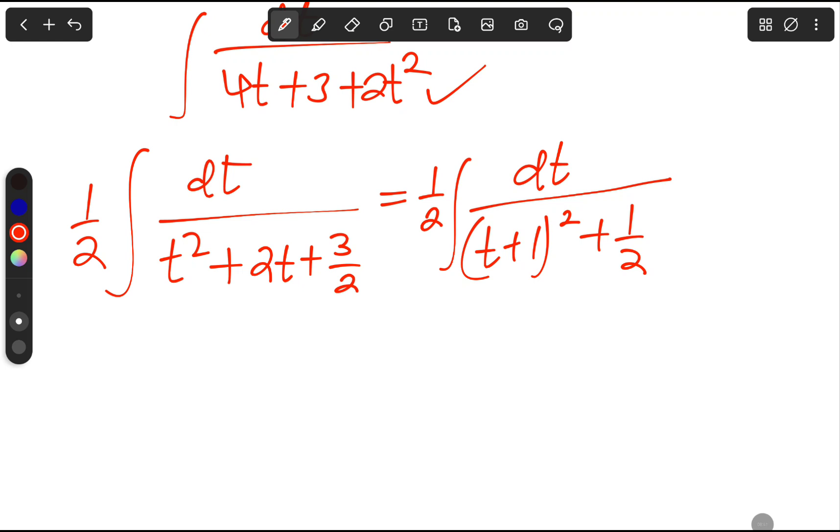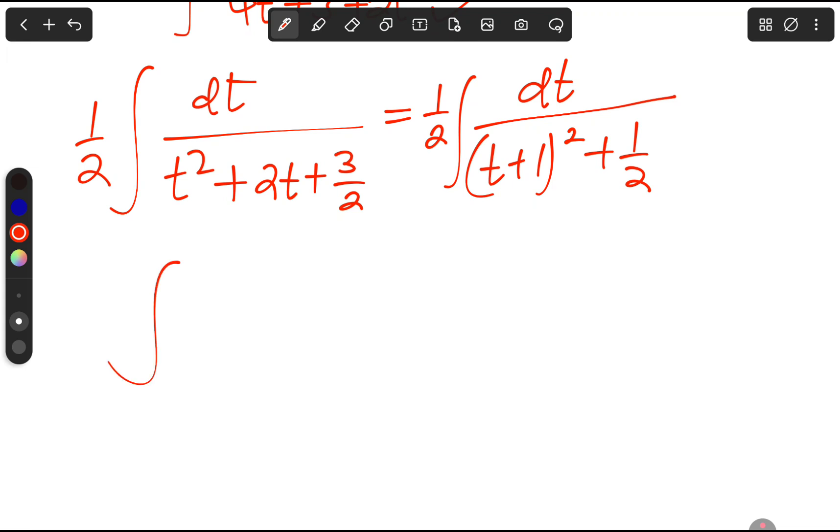And this will be half integral. After we complete the square what do we get? dt over - of course complete the square we find half of 2t which just be like 1 then squaring it. So we end up having t plus 1 squared. Of course that guy should be subtracted from 1 from 3 over 2, which will be like 3 over 2 minus 1 which will give us 1 over 2. So we're going to get plus 1 over 2 here.